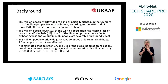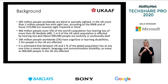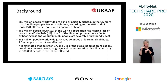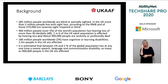A wide range of disabilities affect people's ability to access information and communicate. 285 million people worldwide are blind or partially sighted. In the UK, more than 2 million people live with sight loss, according to the RNIB, and of those 270,000 are severely sight impaired or blind. 466 million people, over 5% of the world's population, has hearing loss of more than 40 decibels. 1 in 6 of the UK adult population is affected by hearing loss, and about 900,000 people are severely or profoundly deaf.